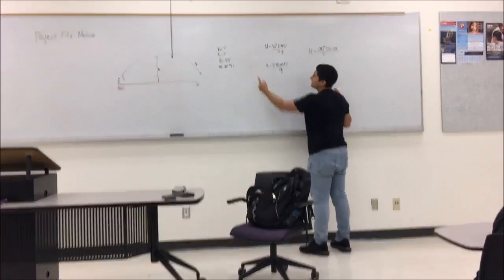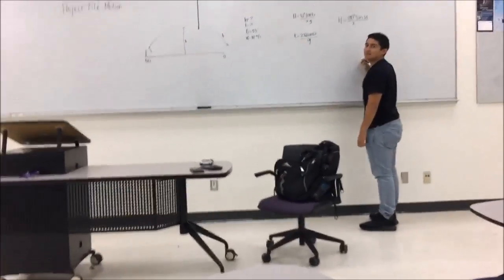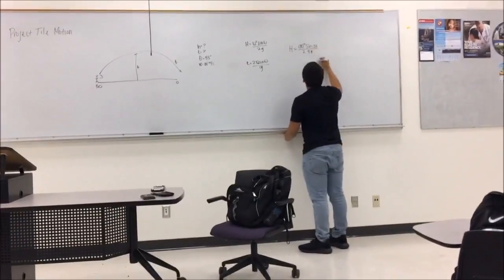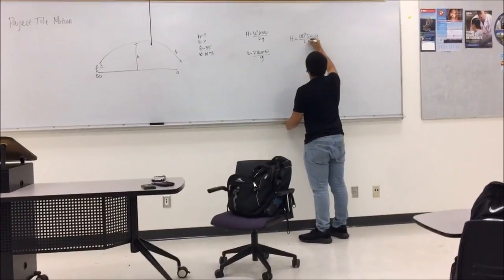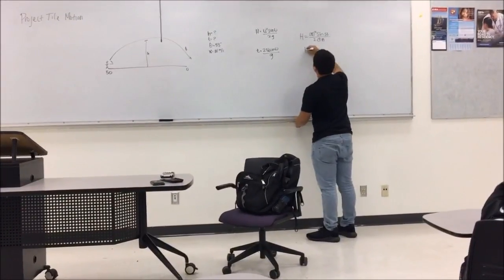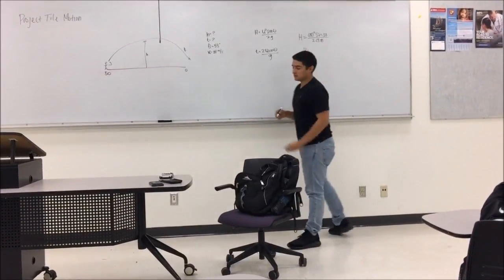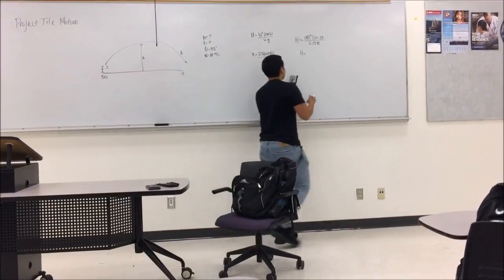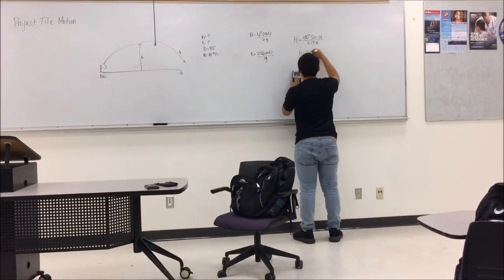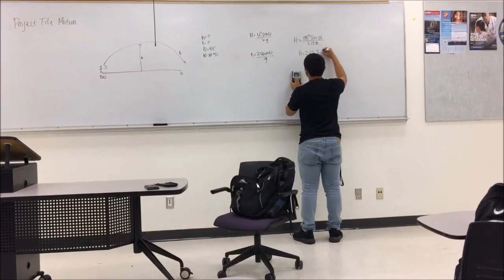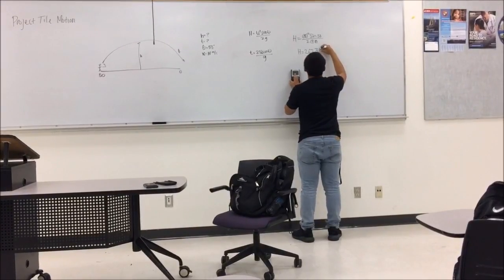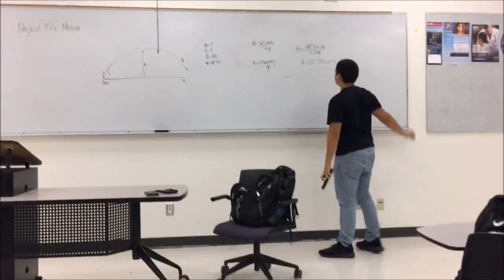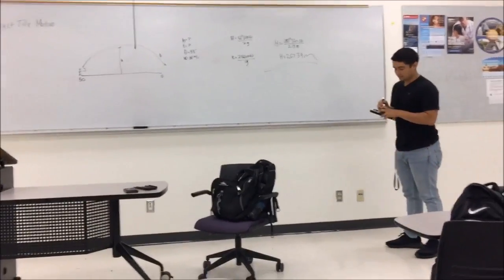Now what do I do for G because it's not there? Gravity would be 9.8. Now I'm going to check the book calculator. The book calculator says 267.34 meters. That's what I got. Thank you, Cesar.